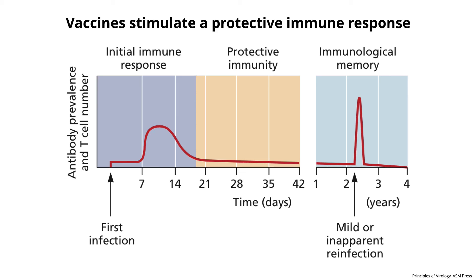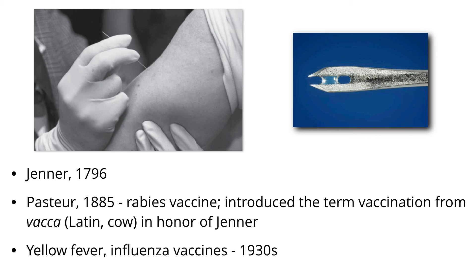The first vaccine that we acknowledge against viruses was developed by Jenner in 1796. He noticed that milkmaids — women who milked cows — never got smallpox. Smallpox was a big deal back then in the UK and also in the colonies. They got something called cowpox, where they got rashes on their skin and they seemed to be protected. He didn't know smallpox was caused by a virus — 1796 is 100 years before virus discovery. He did an experiment where he inoculated a young boy with material from a cowpox pustule on the hand of a milkmaid, and then two weeks later challenged him with smallpox virus, and the boy lived.